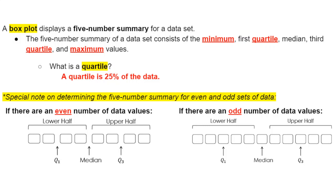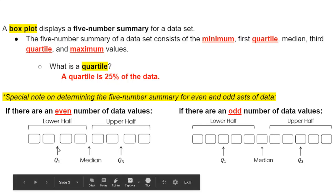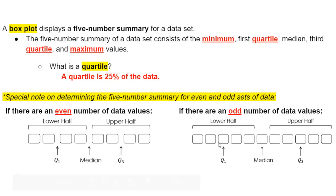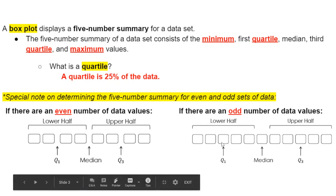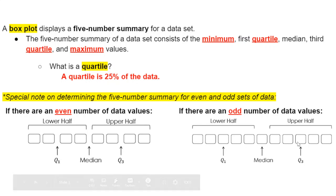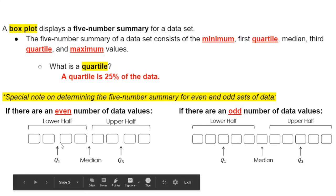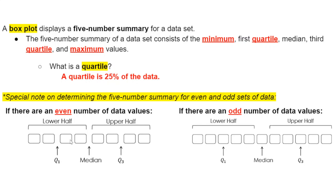The special note here is discussing the difference between finding a box plot for an even number of data values and an odd number of data values. With even numbers of data values, you're going to have to find the median or average of the first quartile, the median, and the third quartile, because there won't be a number exactly in that spot. But for even sets, you have to take the median of those two numbers right above and below each quarter.